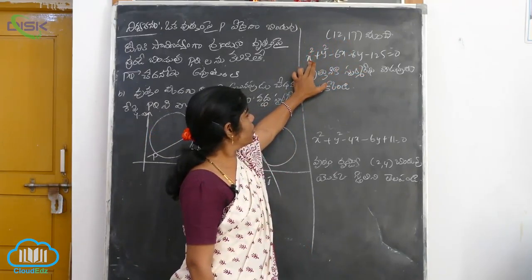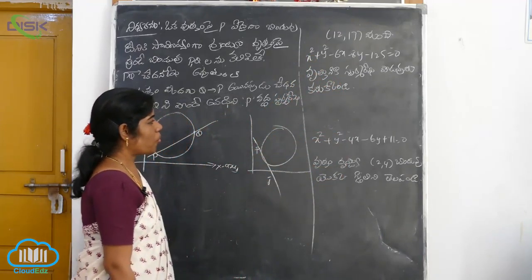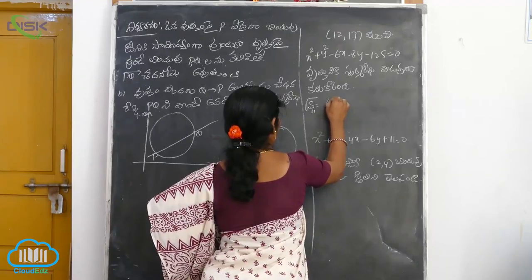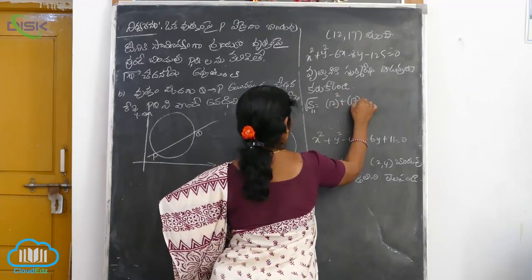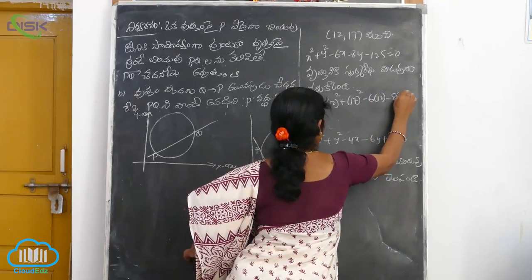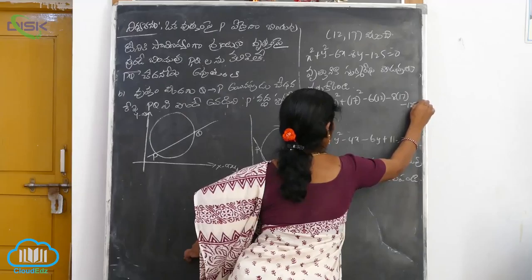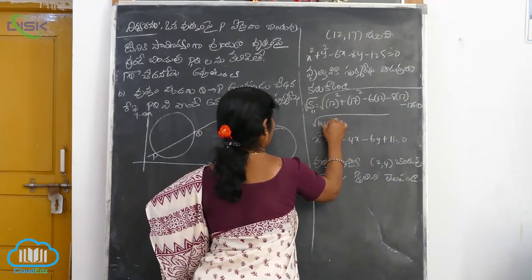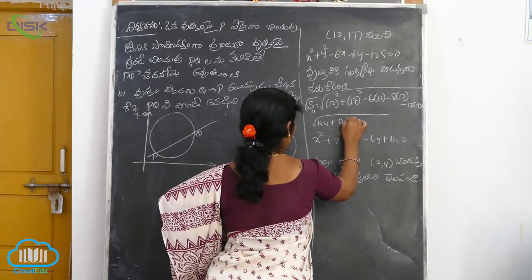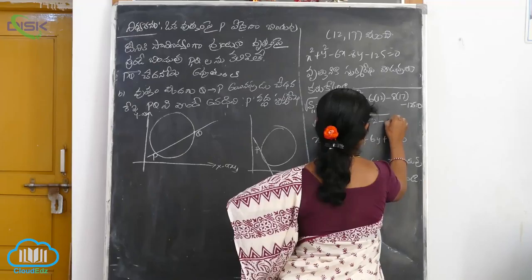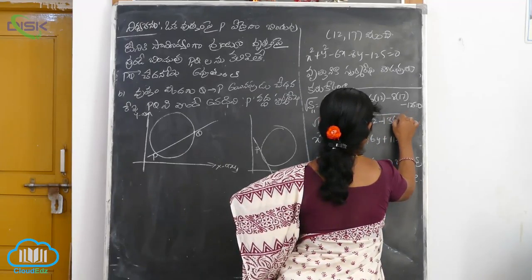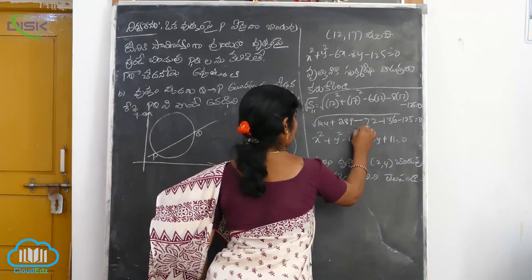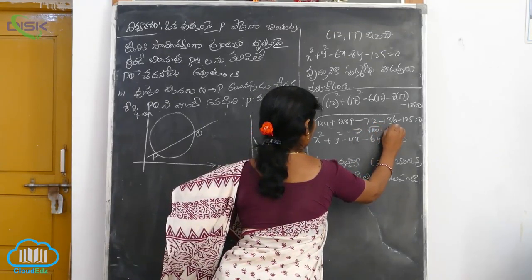We will try to find the same way. We will check this way. We will write the formula: 12 squared plus 17 squared minus 6 into 12, minus 8 into 17, minus 125 is equal to 0. So, 12 squared is 144, 17 squared is 289, minus 72, minus 136, minus 125 is equal to 0. The square root of 100 is equal to 10.